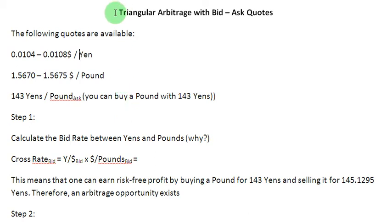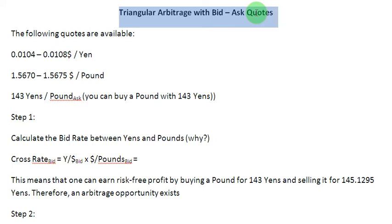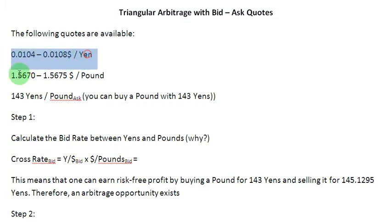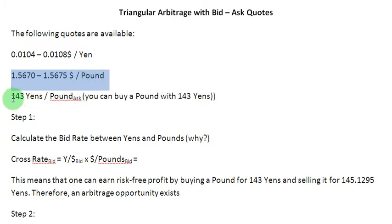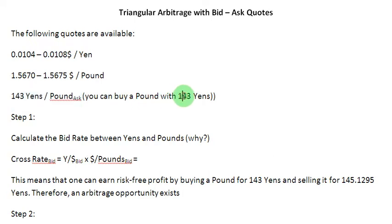Ladies and gentlemen, welcome to this screencast in which we are going to see how to conduct triangular arbitrage when we are dealing with bid and ask quotes. For that purpose, we have a few quotations available with us. We have a quotation between dollars and yens, another one between dollars and pounds, and a third quotation which is the ask rate between yens and pounds, indicating that you can buy one pound with 143 yens.